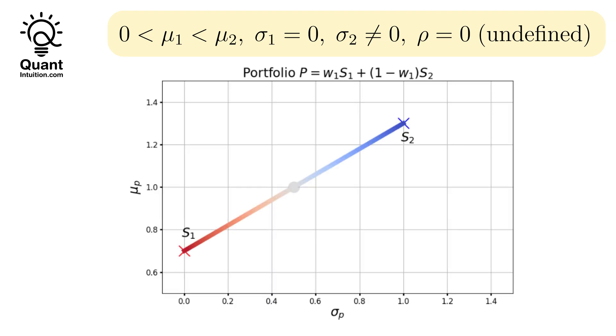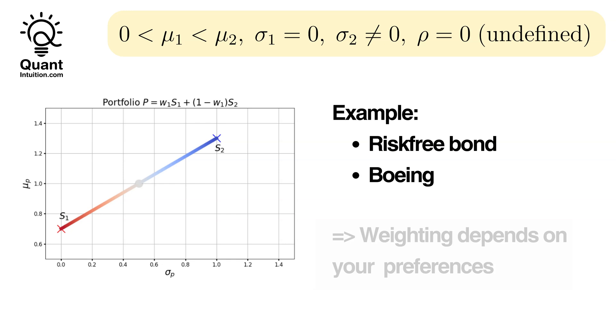This linear relationship is depicted in the plot, where we now see a line with a positive slope. The point representing an equally weighted portfolio falls precisely between the stocks again. This is an important example, because it occurs very often in the real world. It resembles a combination of a risk-free bond and some other product, such as Boeing stock.